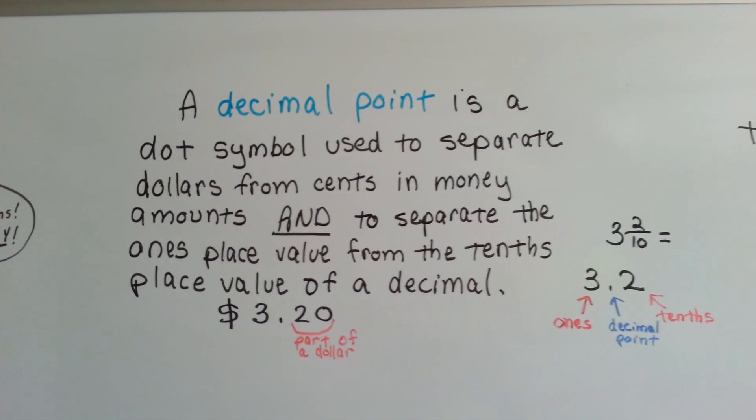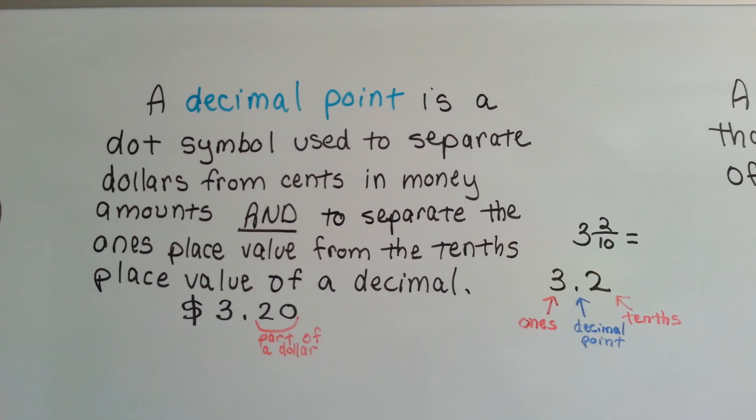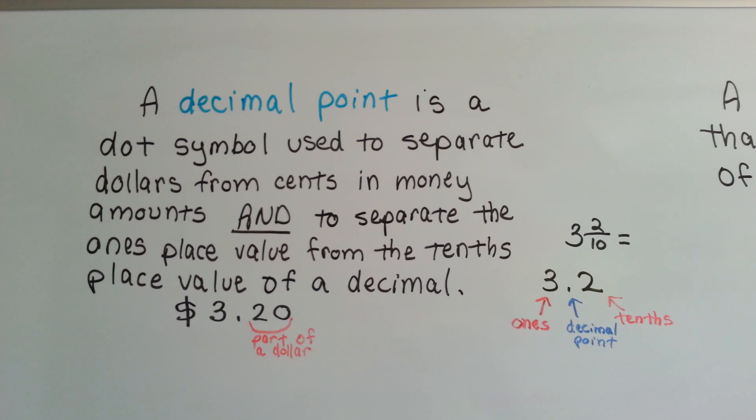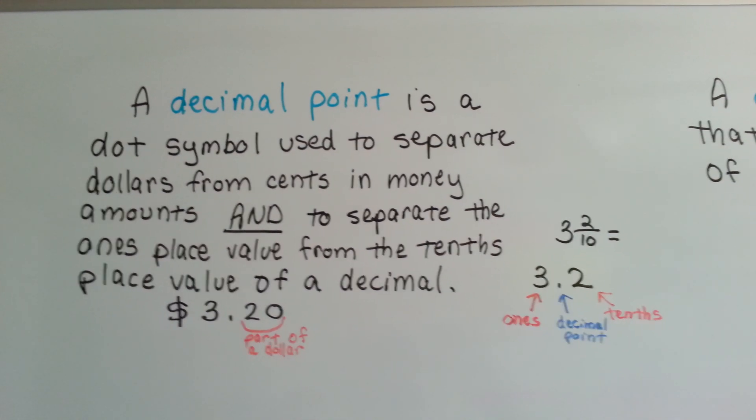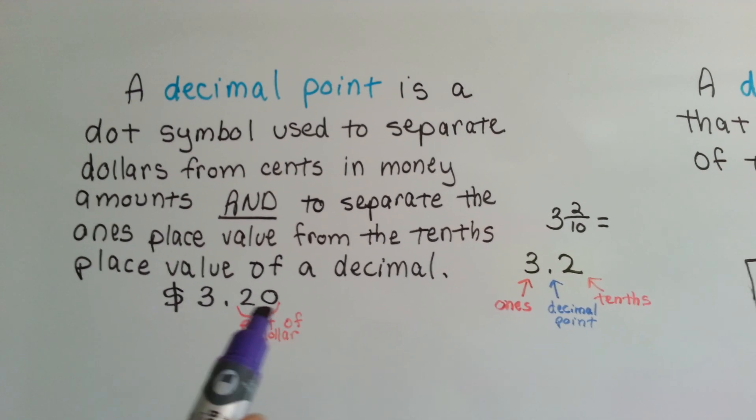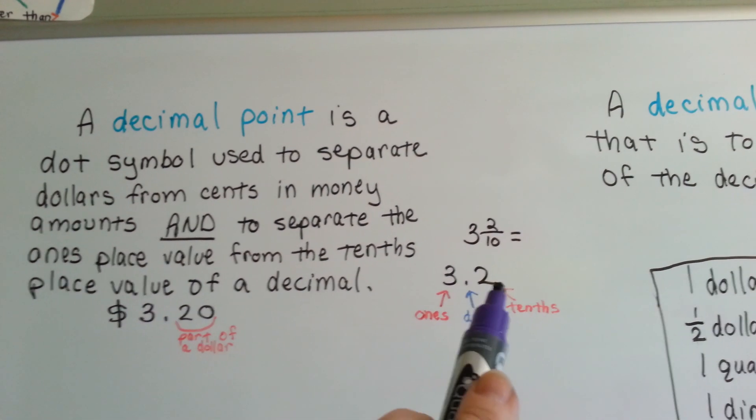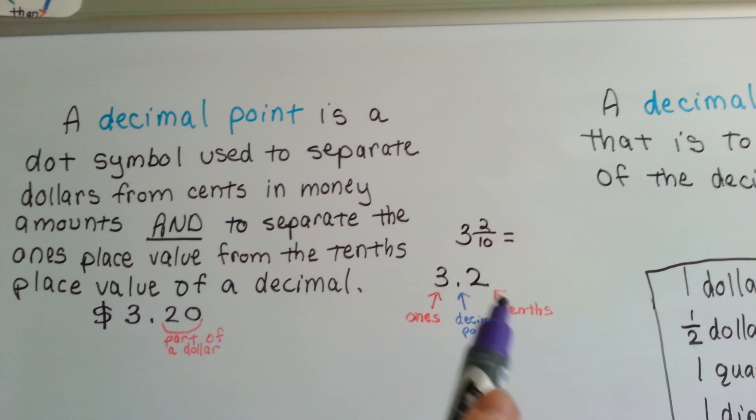A decimal point is a dot symbol used to separate dollars from cents in money amounts and to separate the ones place value from the tenths place value of a decimal. See, it's separating the dollars from the cents over here. This is all parts of a dollar on that side. Here's the ones place, the decimal point, and the tenths place.